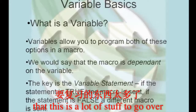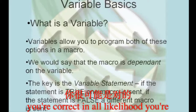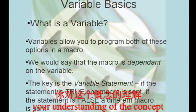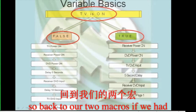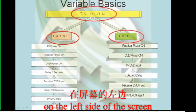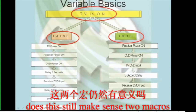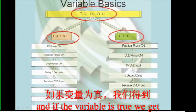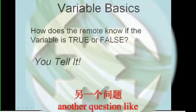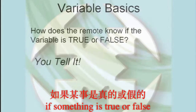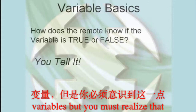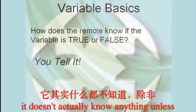Now, if at this point you're thinking that this is a lot of stuff to go over just to make your macro shorter, you're correct. In all likelihood, you're never going to perform the exact example that we're using here, but you'll see some other ways to use variables after we firm up your understanding of the concept. So, back to our two macros. If we had a variable statement "TV is on" and if it's false, we tell the remote to send out the macro on the left side of the screen. If it's true, we tell it to send out the macro on the right. Two macros, one button — if the variable is true, we get one macro; if it's false, we get the other. Hopefully you're beginning to think of another question like: how on earth does a remote even know if something is true or false? Well, you obviously have to tell it. This is a very important point to grasp — a remote control is a one-way device. It doesn't actually know anything unless you tell it.